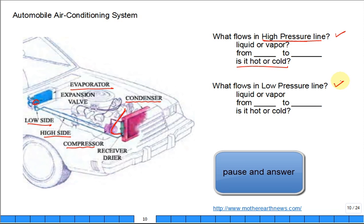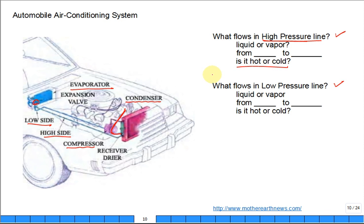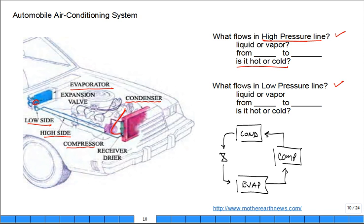All right, so we started this session saying there was a condenser, evaporator, compressor, and a metering device restriction. Did the refrigerant flow that direction through the four devices? Where is the high pressure side? Where is the low pressure side? So we cut it here. The compressor boosts the pressure, so this is the high pressure side.